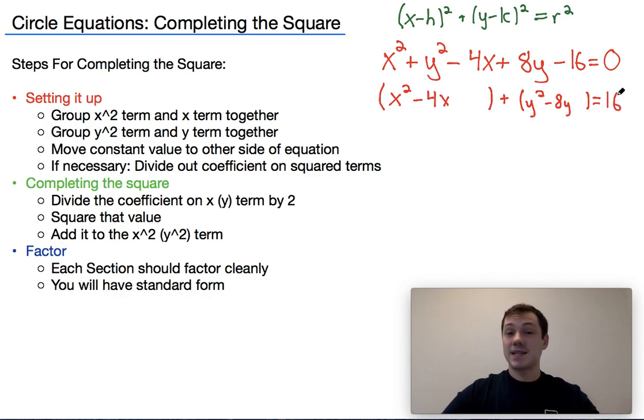And I'm going to go ahead and move that 16 over to the other side. All right, that's basically it for step one. There's this if necessary, divide out the coefficient on the square terms. I'll explain that when I do the second example, which is going to be a little bit more complicated.